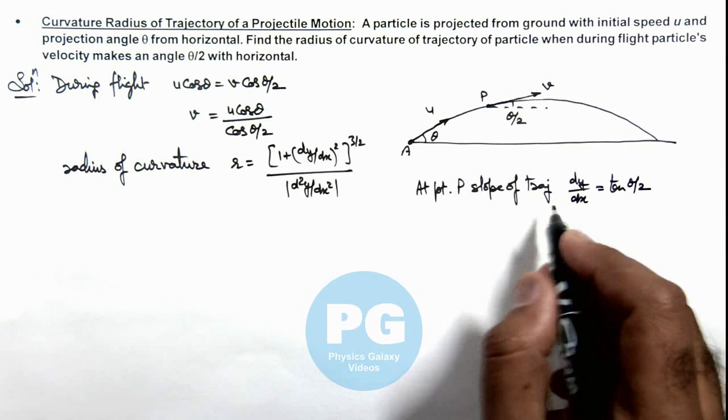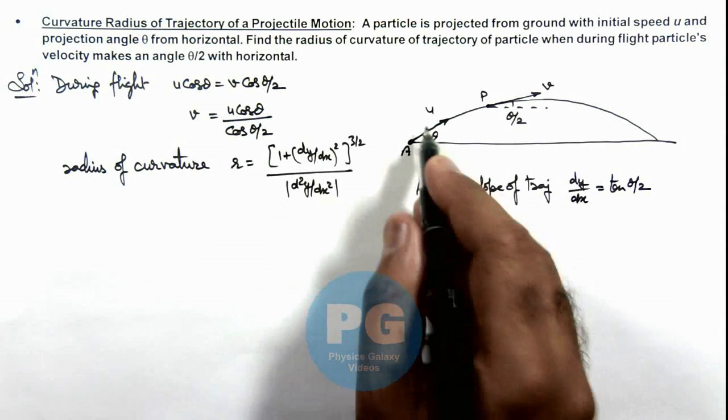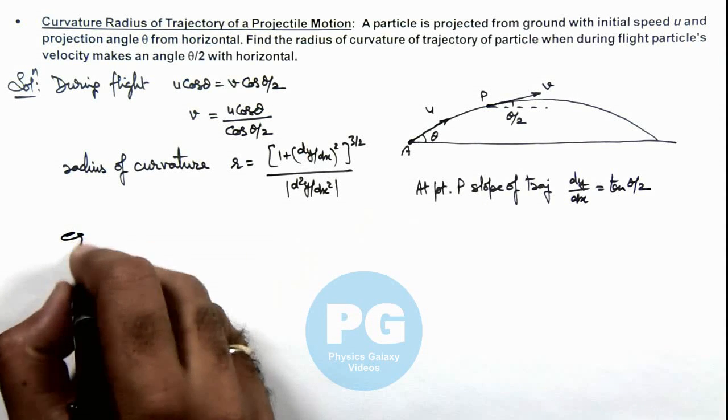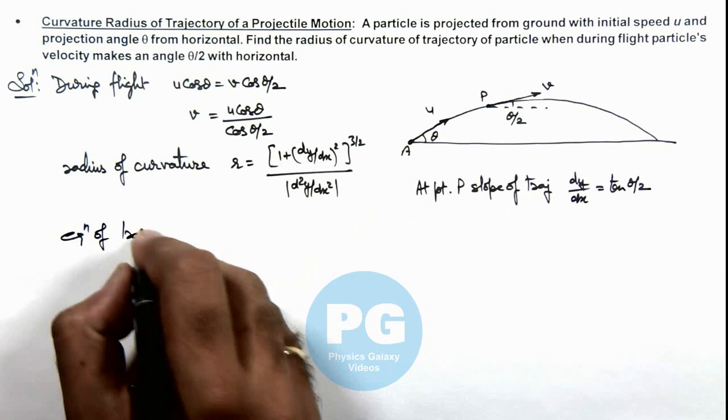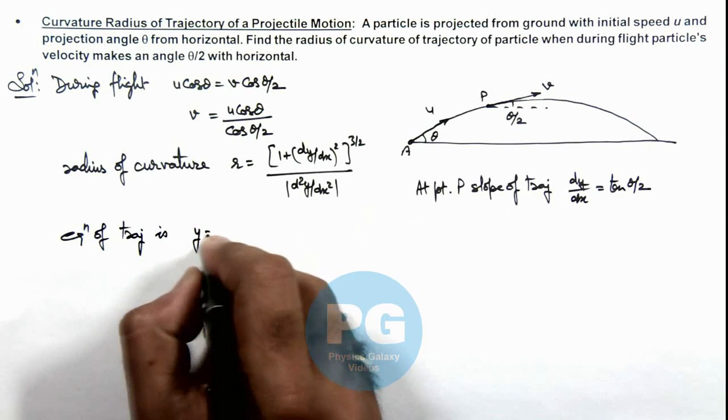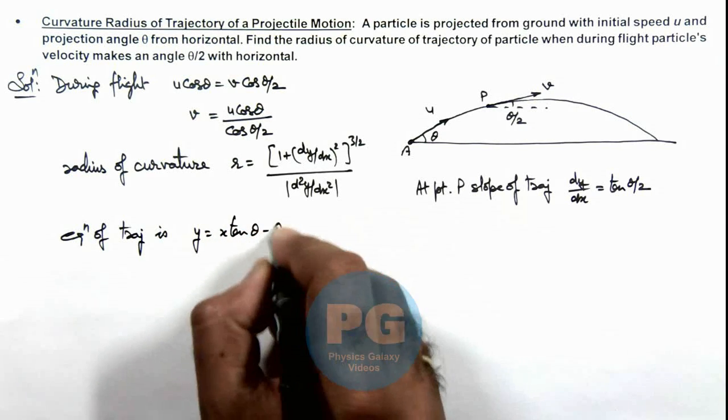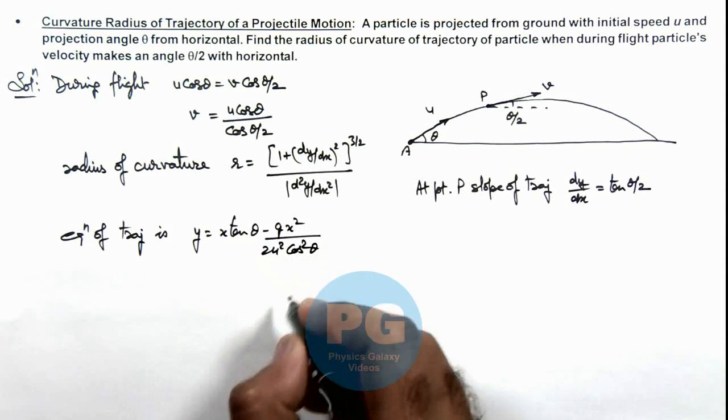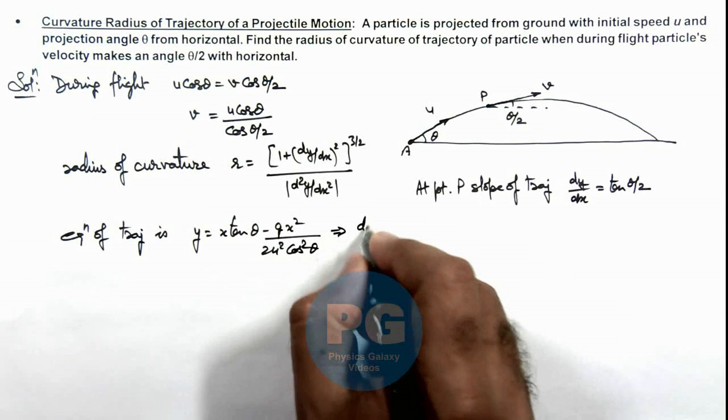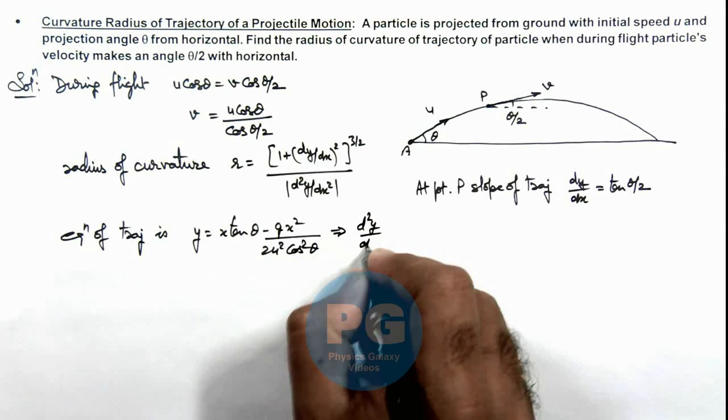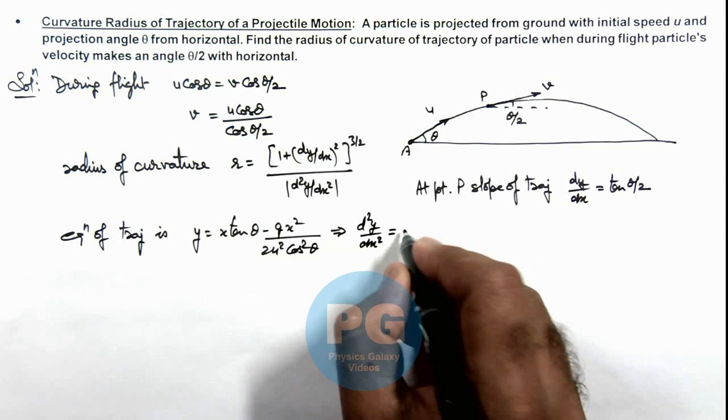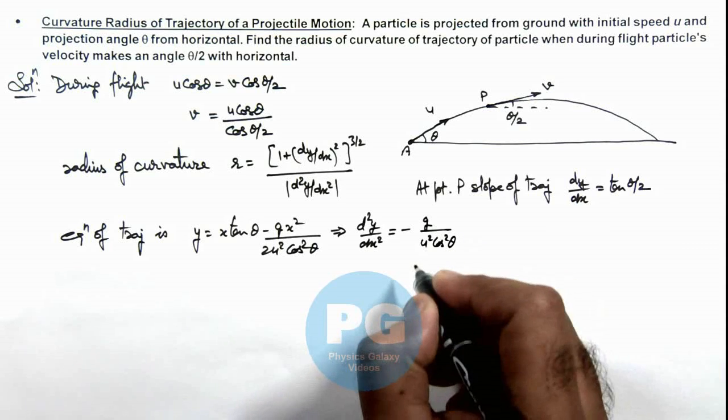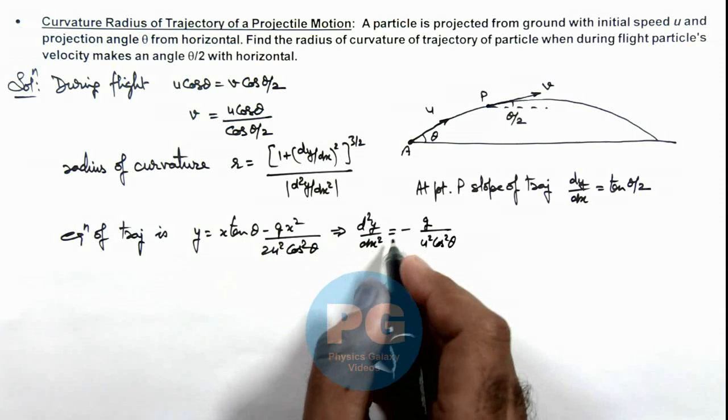And if we calculate the second derivative, then the equation of trajectory will give us second derivative. The equation of trajectory is y = x tan θ - gx²/(2u² cos² θ). So from here we can get the value of d²y/dx², which is -g/(u² cos² θ). You can simply differentiate it twice with respect to x.